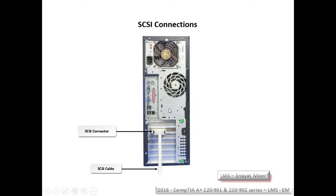SCSI connections, as you see on the back of the PC, use 50 pins, 68 pins, or 80 pins. There are different types: Narrow SCSI, Wide SCSI, Ultra Wide SCSI, SCSI 2, and SCSI 3. We have a separate topic about SCSI in a later video where we'll discuss that in more detail.